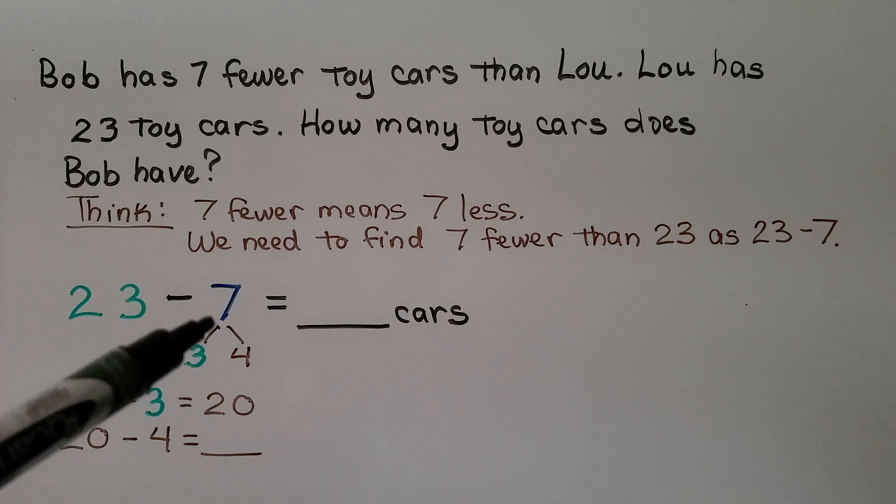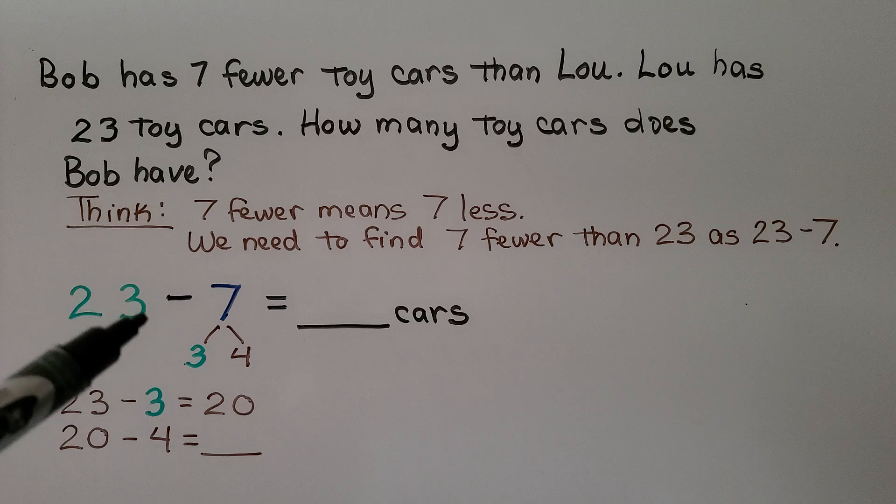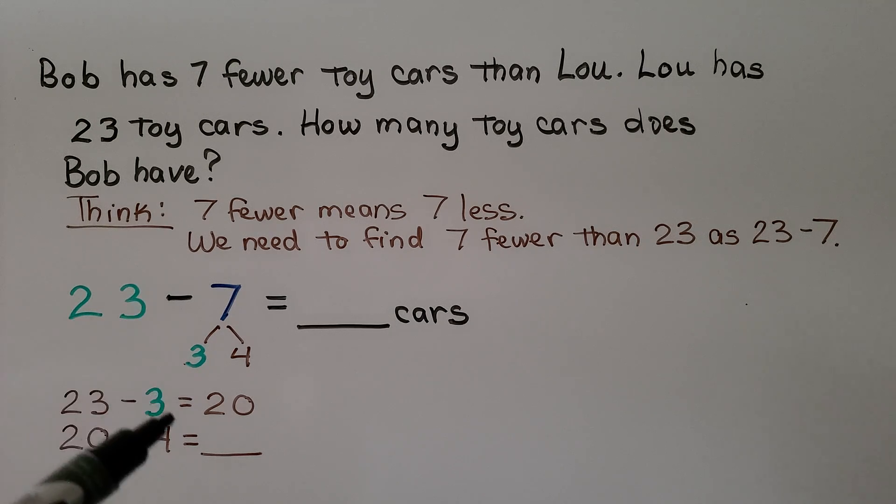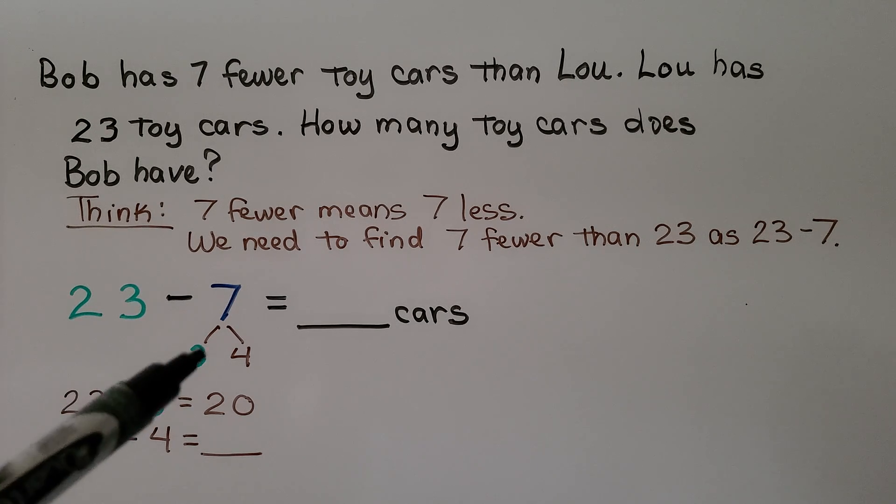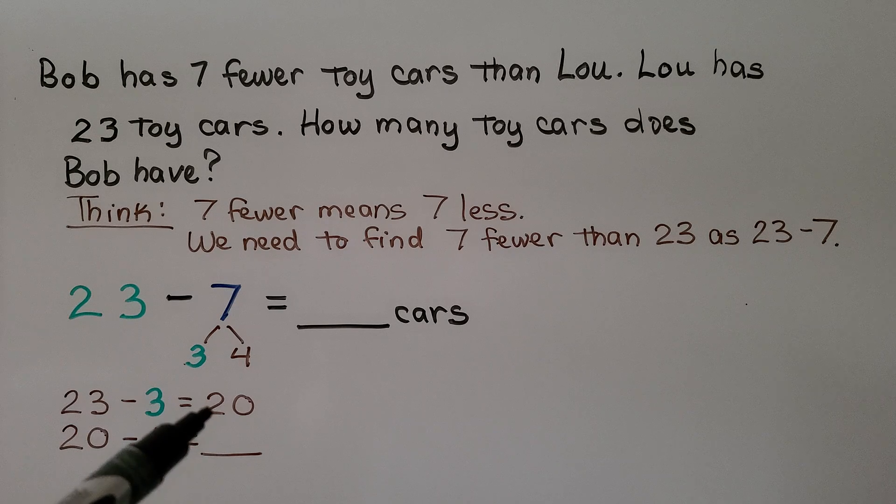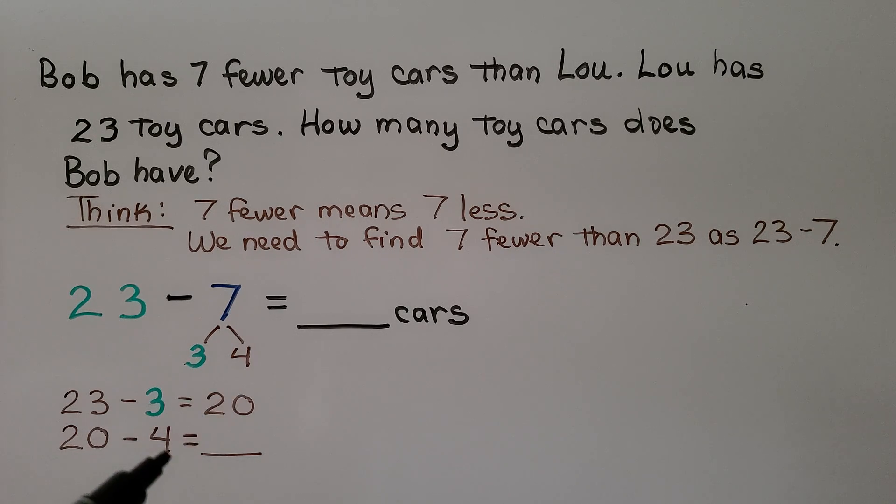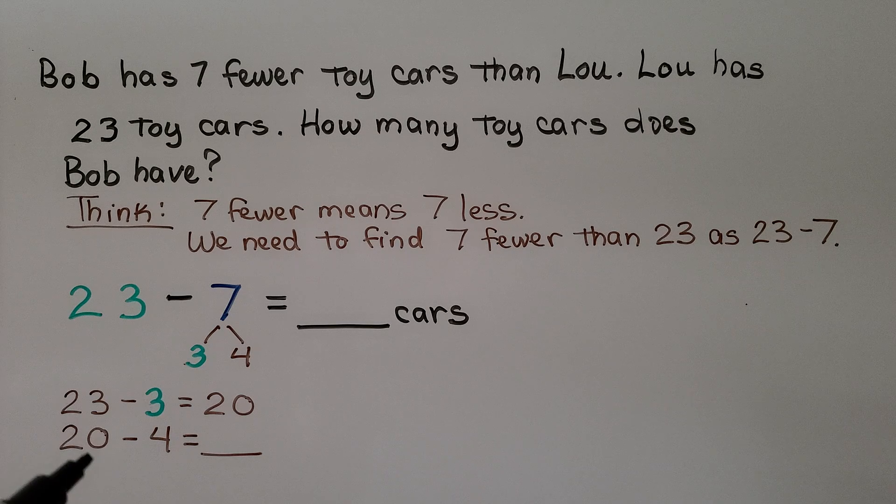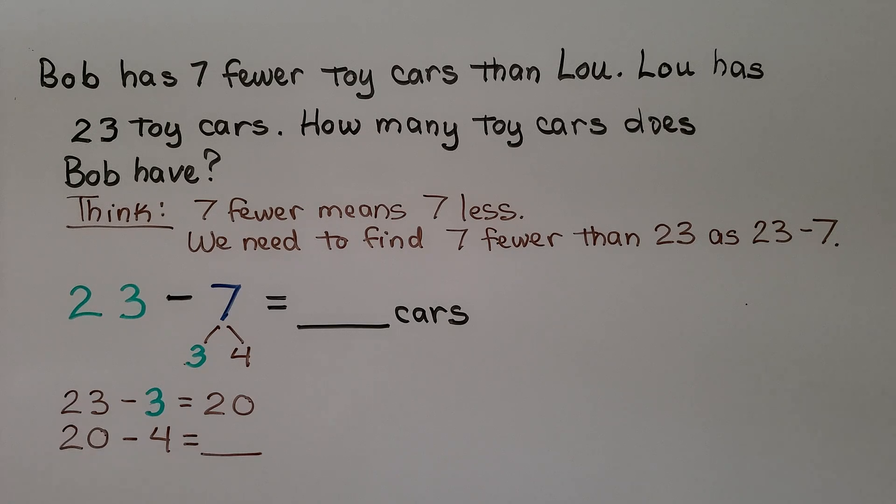We break apart the 7 as 3 and 4 because there's a 3 in the minuend. We do 23 minus that 3 and we get 20, a tens number. Now we take away the 4 remaining and 20 minus 4 equals...